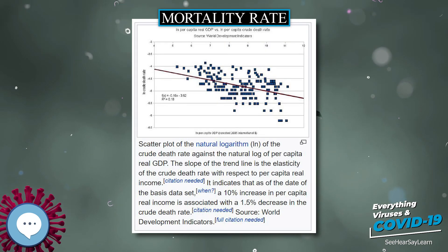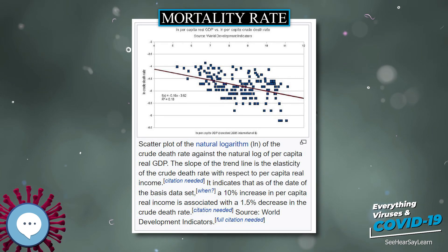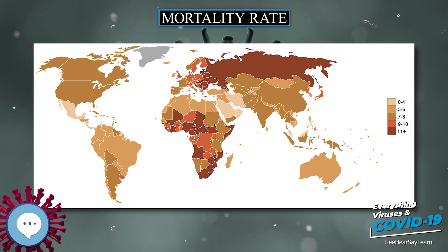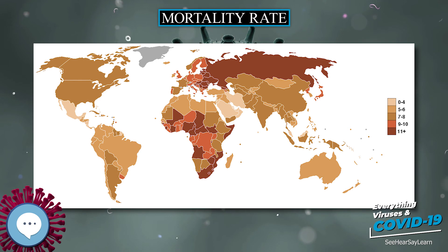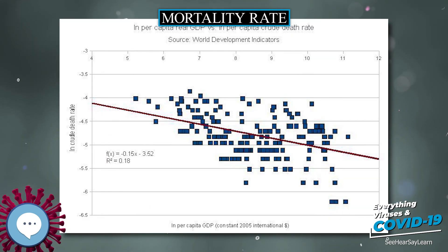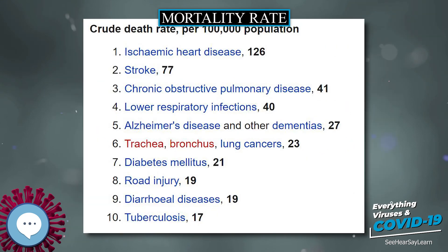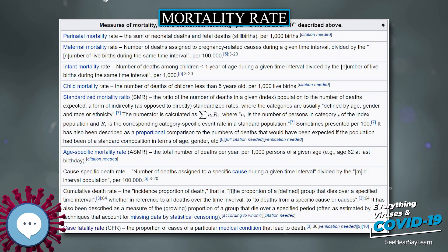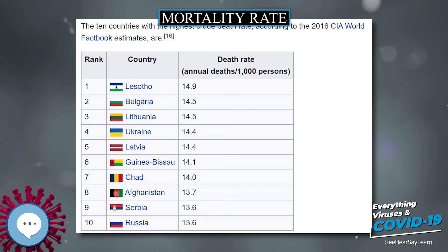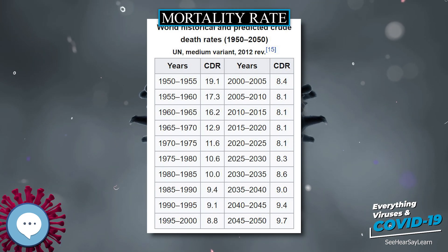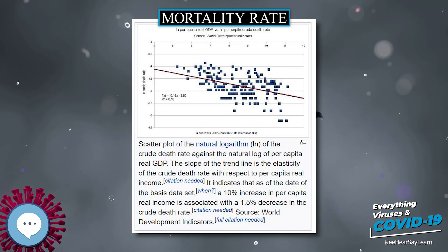Indian economist and philosopher Amartya Sen has stated that mortality rates can serve as an indicator of economic success and failure. Historically, mortality rates have been adversely affected by short-term price increases, with studies showing that mortality rates increase concurrently with increases in food prices. These effects have a greater impact on vulnerable, lower-income populations. In more recent times, higher mortality rates have been less tied to socioeconomic levels within a given society, but differ more between low- and high-income countries.